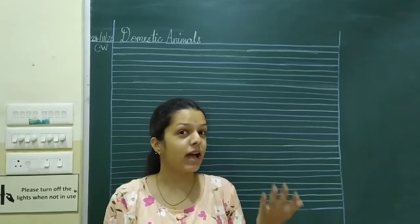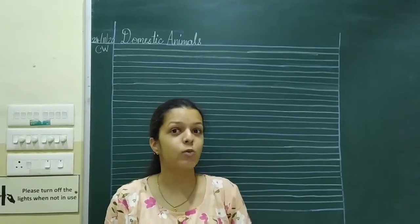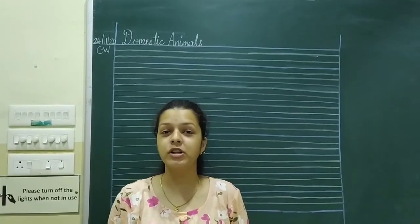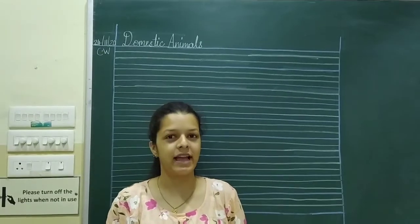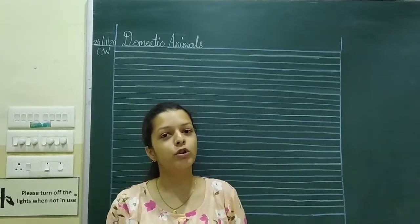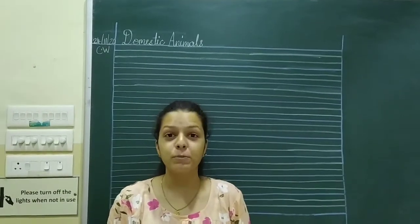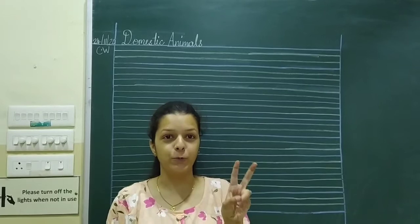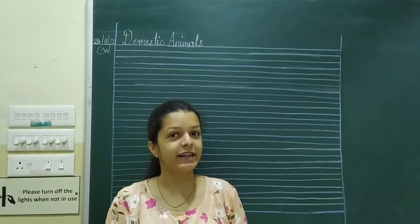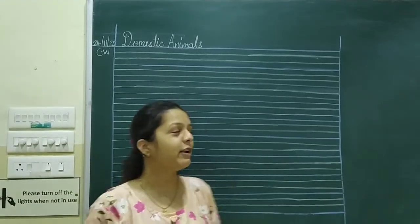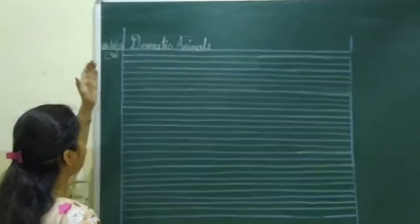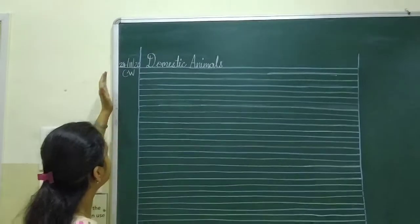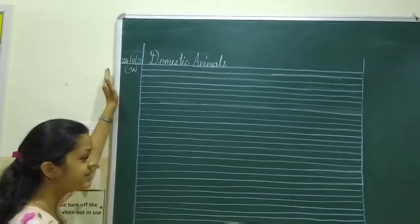There are some animals which are wild also, but today we are going to learn only domestic animals. So remove your E2 notebook, which is of second term, and write the title 'Domestic Animals', today's date, and CW.